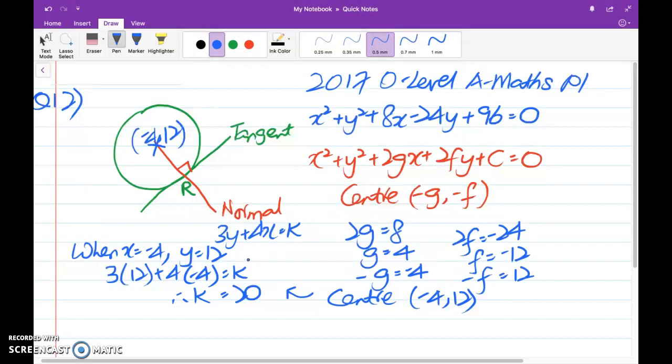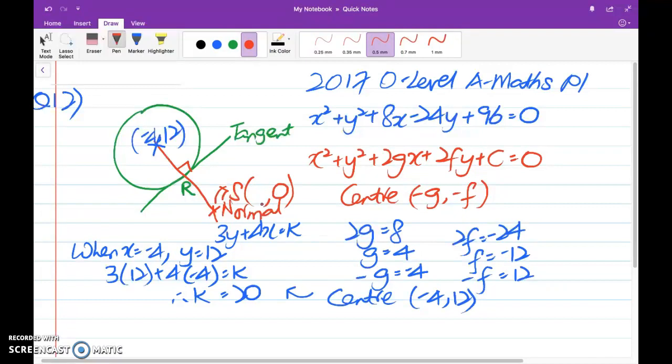Now we're going to carry on with part 2 of this question, another 5 marks. Here's the second part. The normal to the circle at R meets the x-axis at point S. Given that R lies between S and the center of circle, find the length of RS. So let me mark out, roughly mark out where is my point S. Let's say for example, point S is somewhere here. Let me just point out this is point S. And since we are told that this point S is where the x-axis is, which means to say the coordinate of this point will be something comma zero.